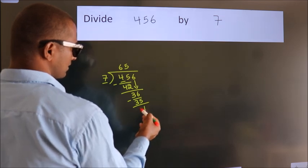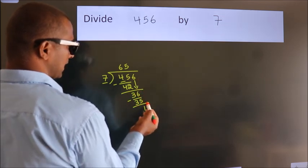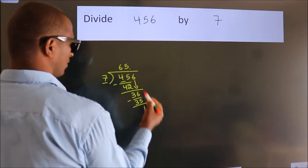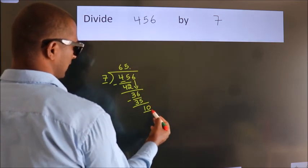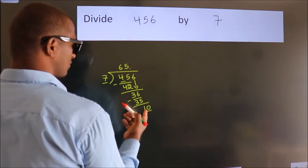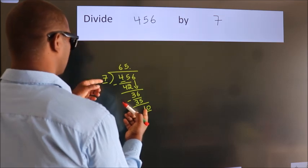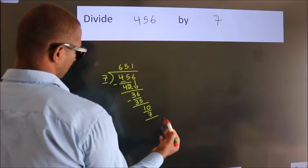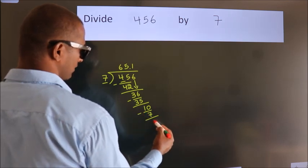After this, no more numbers to bring down. So what we do is we put a dot and take 0. So 10. A number close to 10 in the 7 table is 7 times 1, which is 7. Now we subtract. We get 3.